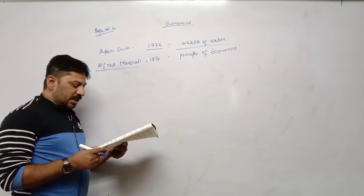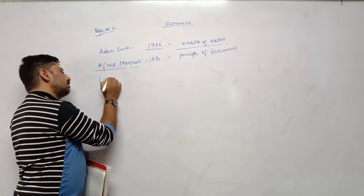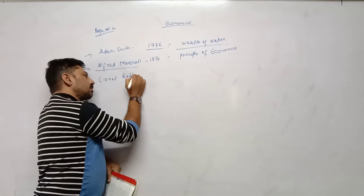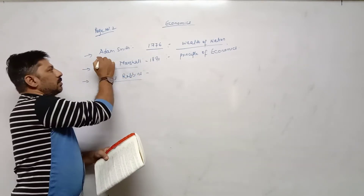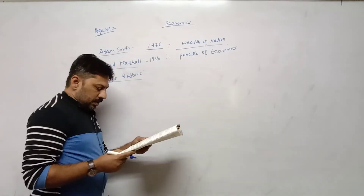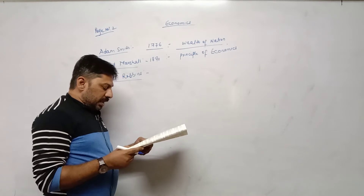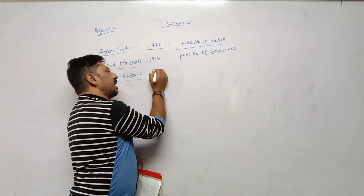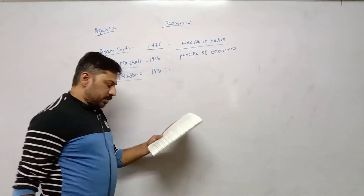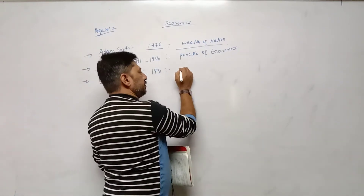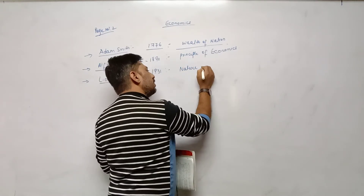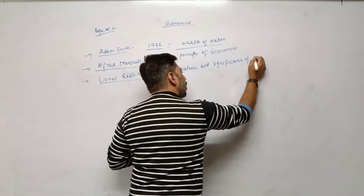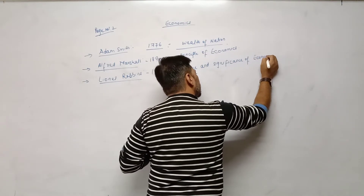The third economist is Lionel Robbins. In 1931, Lionel Robbins published his book named Nature and Significance of Economics.